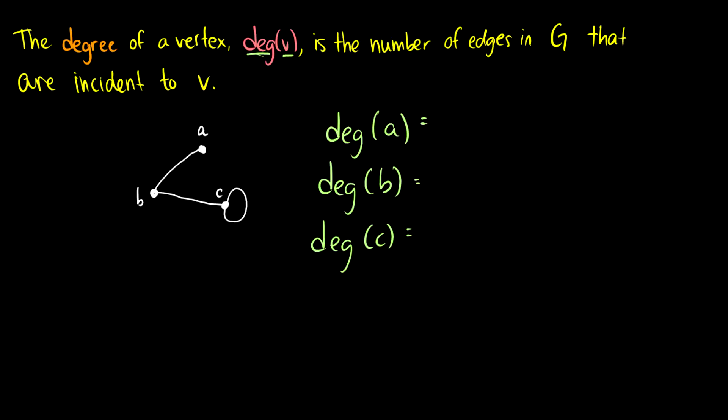I have a nice small graph here with three vertices and three edges. If we take a look at what is the degree of a — here's vertex a and it has one edge incident to it — so the degree of a is one. What about b? Well b has the edge going to a and it has an edge going to c, so the degree of b is two.